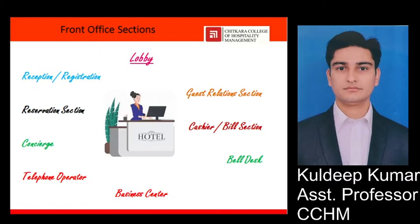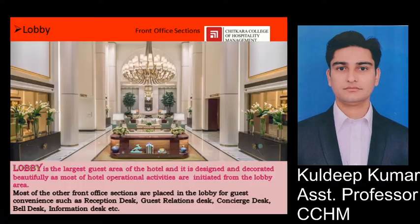Here is the list of various sections of Front Office, namely: Lobby, Guest Relations, Cashier, Bell Desk, Business Centre, Telephone Operator, Concierge, Reservation, Reception, etc. All these various sections have their own role to play — a very crucial role — in the overall operations of the Front Office Department. So let's talk about each section individually.